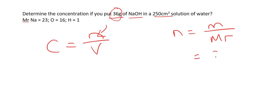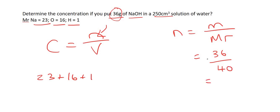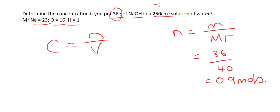The mass is 36. The Mr you'd get from your periodic table, but to save space I've added the values here. For Na it's 23, plus oxygen, plus hydrogen, and that gives us a value of 40. If you work that out, you get 0.9 moles.